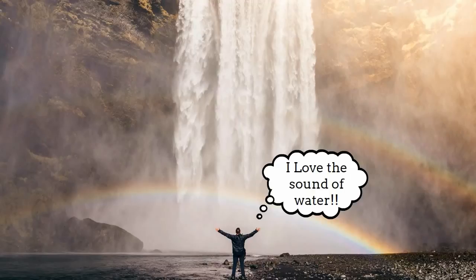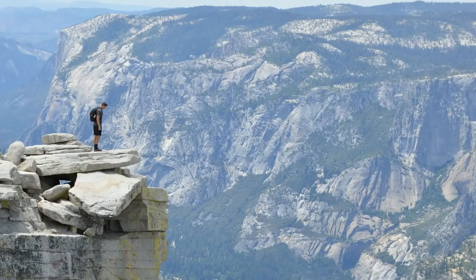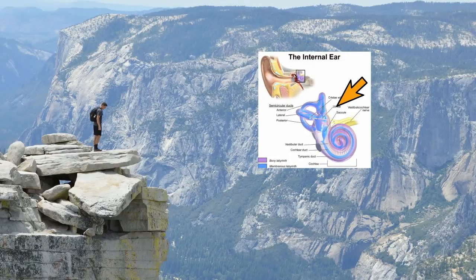The ear is also important for balance, and it has what are called semicircular canals that help you regulate your balance, but I'll cover that in another video. So there we go — the ear has three parts and three tiny bones, but it allows you to hear.